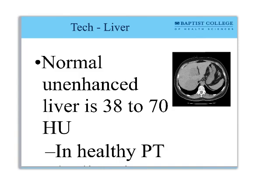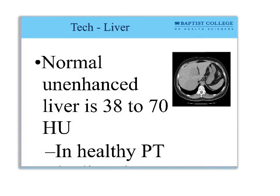Here's an example question: measurements for a CT image show liver density at 35 Hounsfield units — normal range is 38 to 70 — whereas the density of the spleen is 65 Hounsfield units, significantly higher than the liver. The likely diagnosis is fatty infiltrate of the liver — answer C is correct.